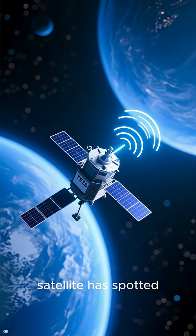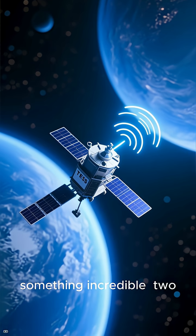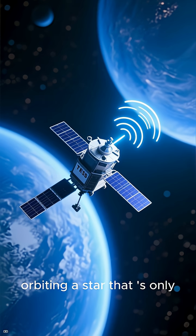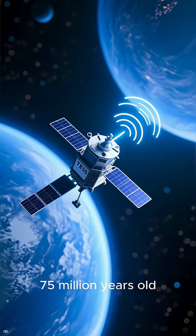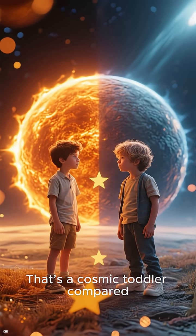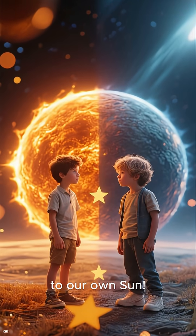NASA's TESS satellite has spotted something incredible. Two Neptune-sized planets orbiting a star that's only 75 million years old. That's a cosmic toddler compared to our own sun.